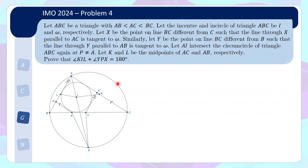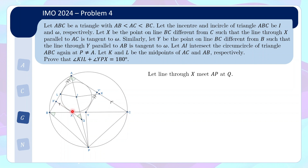I think the diagram is not too complicated, but feel free to pause the video and look through the diagram and the problem statement again if you need some time. Given that this is problem 4, there are actually many possible ways of solving the problem. I'll go through one of the solutions, and I'll talk about the solutions first before I talk about how you might motivate coming up with this solution. What I will do is extend the line through X and let it meet AP at the point Q. Now I do some angle chasing.